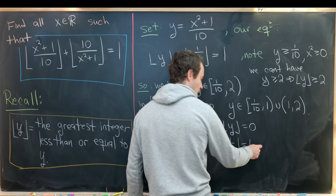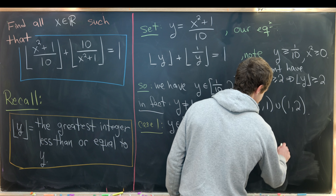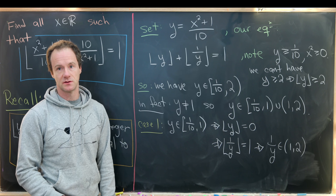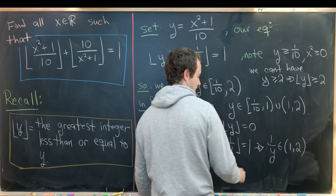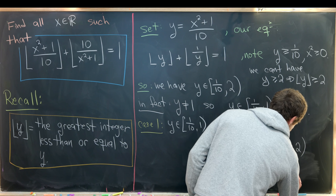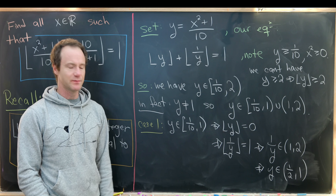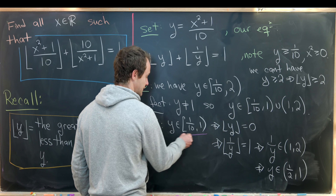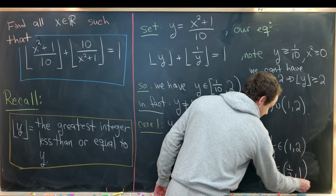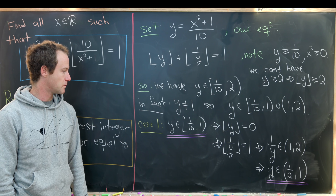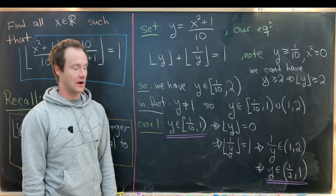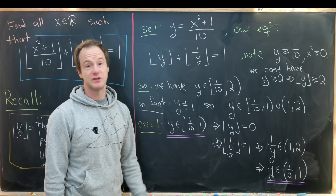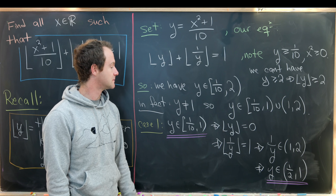For floor(1/y) to equal 1, we need 1/y to be on the open interval (1, 2). That means y must be on the open interval (1/2, 1), by taking reciprocals. So if y is in (1/10, 1), it must actually be in the smaller interval (1/2, 1). Any y in that open interval gives a 1/y between 1 and 2, which floors to 1 — giving a valid solution.